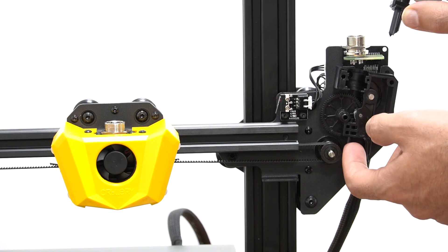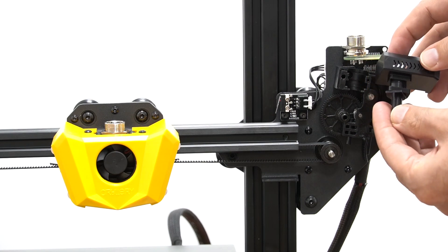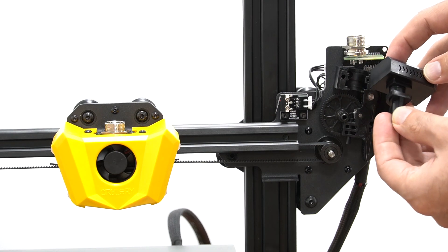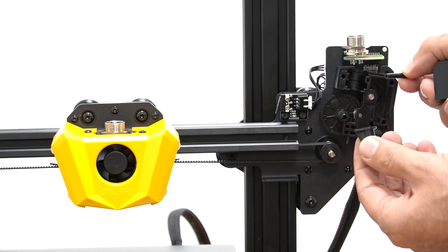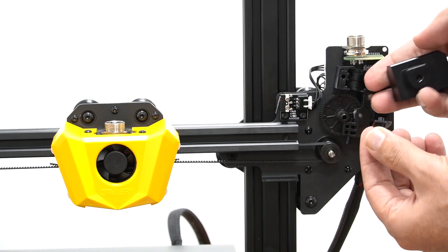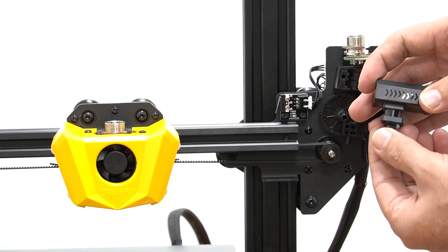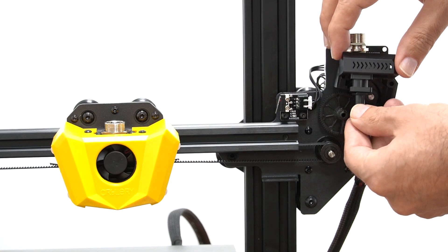So this is the upper part which connects to the PTFE tube down here. As you can see, you can totally remove it, put it inside, put the upper one, and then put it back.